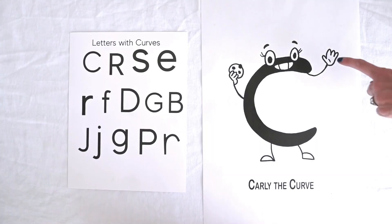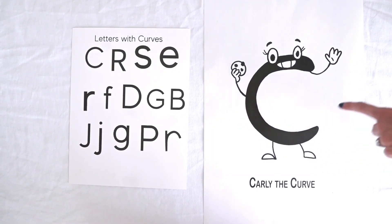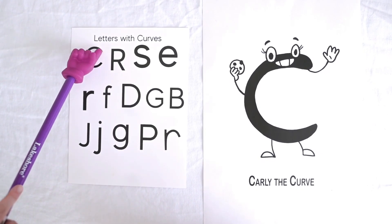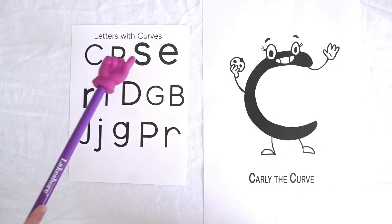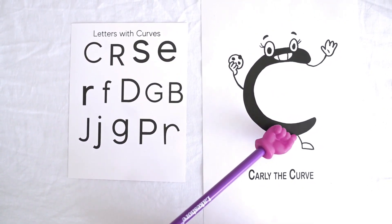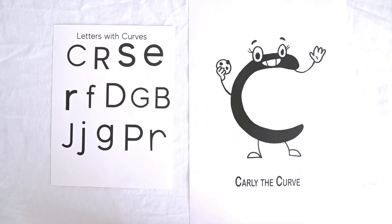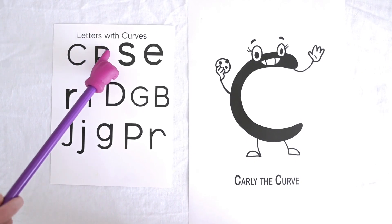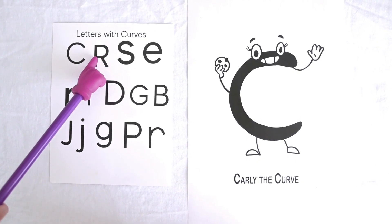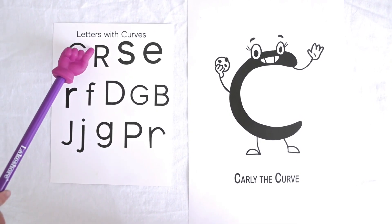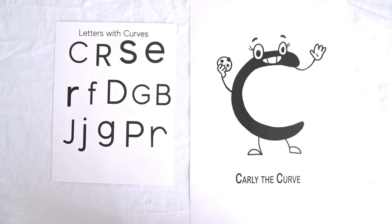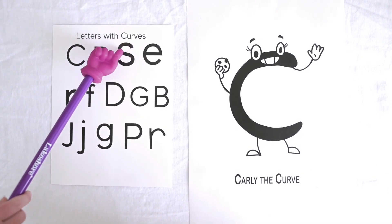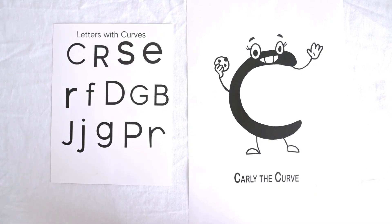So Carly is a curve and there are curves in our letters. We have a curve right here in the letter C. The letter C is shaped just like Carly. Now this one's a little tricky. Do you see the curve in our big R? The curve comes around like this. Let's take a look at S. S has two curves — curve, curve, S.